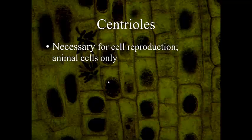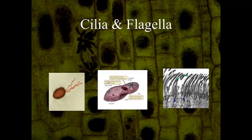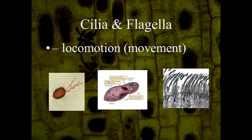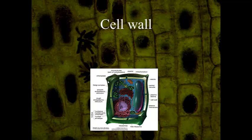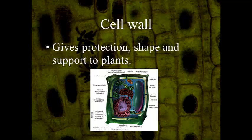Chloroplasts, mitochondria, and ribosomes are the most interesting organelles. Centrioles help with cell division in animal cells only. They go to opposite ends of the cell and pull apart the DNA so the cell can divide, sending some DNA one way and some the other. The cilia and flagella are used for locomotion and movement. The cell wall protects the plant, gives it shape and support, is very rigid, and controls what enters and exits — it's a protection layer.